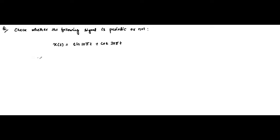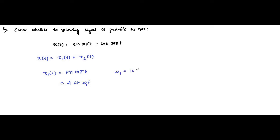Here X(t) is equal to X1(t) plus X2(t). X1(t) is equal to sine 10π t. If we compare it with the basic format A sine(ω1 t), here ω1 is equal to 10π. So 2π f1 equals 10π, that implies f1 is equal to 5, and T1 is equal to 1/5 seconds. This is the time period of the first signal.